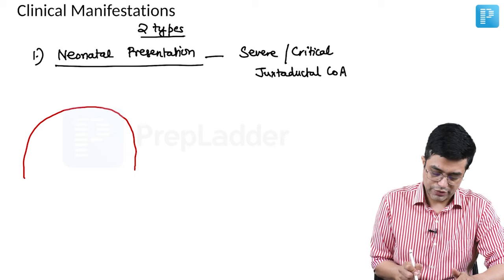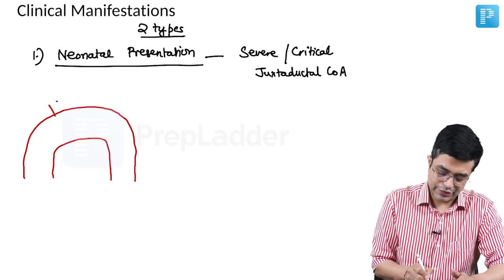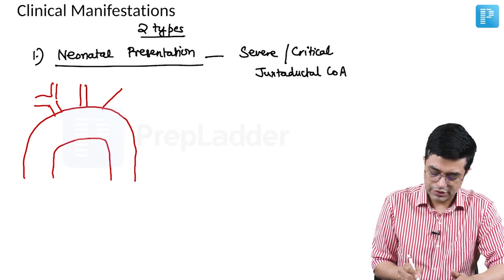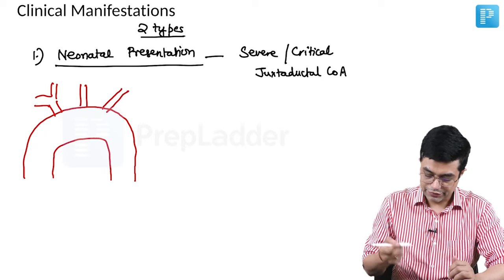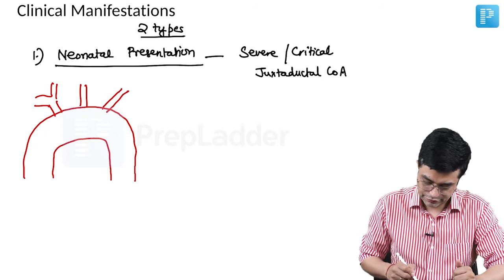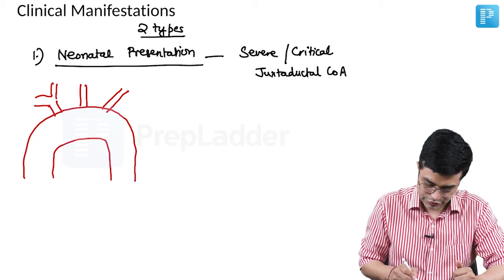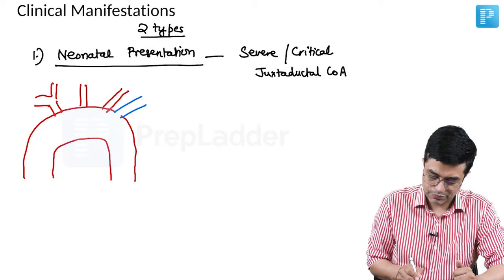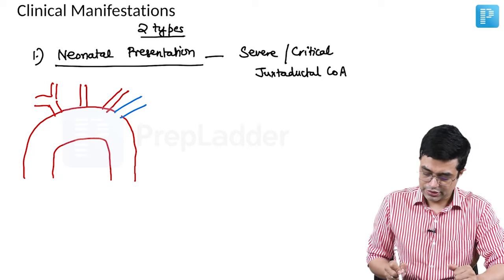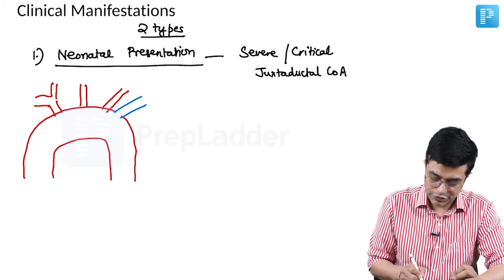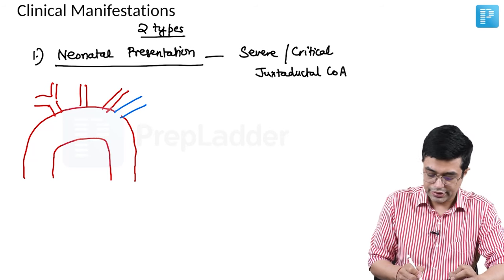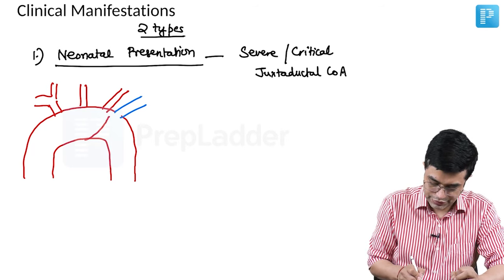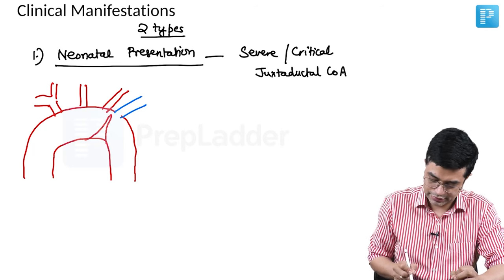This is the arch of aorta. This is the brachiocephalic trunk. This is your left common carotid. This is your left subclavian artery. And where is ductus arteriosus associated? This is the site where the ductus arteriosus will be attached. So this is the site of ductus arteriosus attachment.